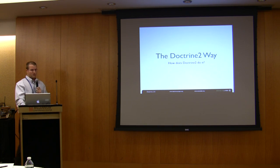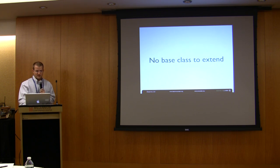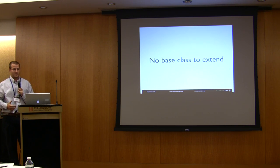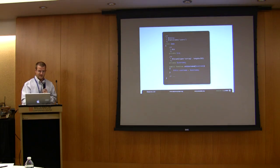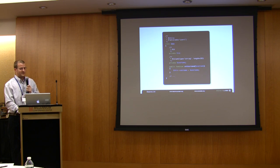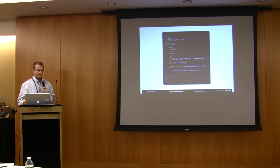So we have all those problems and then the Doctrine 2 way aims to solve a lot of those problems. So no longer do you have to extend a base class. Now you're just working with regular vanilla PHP objects and they're persisted transparently. So here's what an entity would look like with Doctrine 2 and you'll notice that it's just a regular PHP object with regular properties. And you define your manual getters and setters.